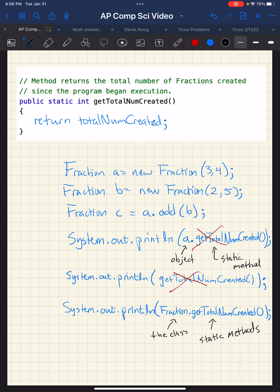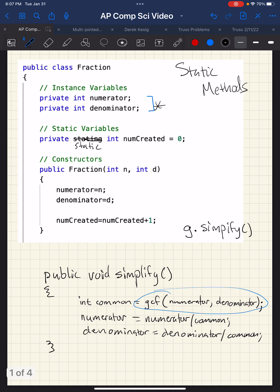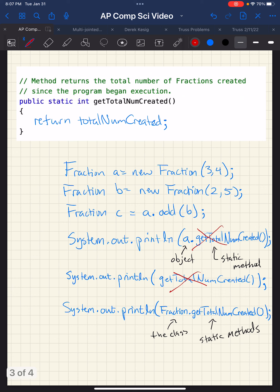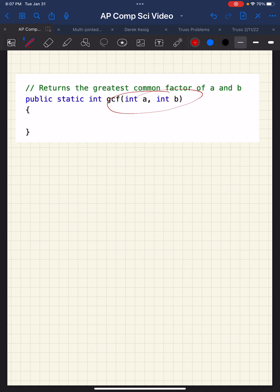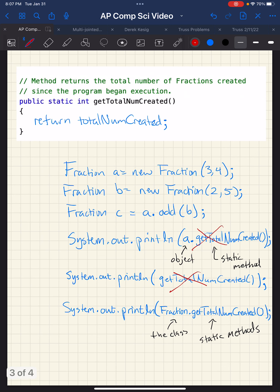So just to review there, the class calls static methods. Non-static methods are called by the objects. And static methods do not have access to any instance variables. Static methods cannot access the instance variables. They can only access static methods, and they can access any parameters that they have, that are passed to them, any arguments passed to those parameters. But they can't access any instance variables. Thank you very much.